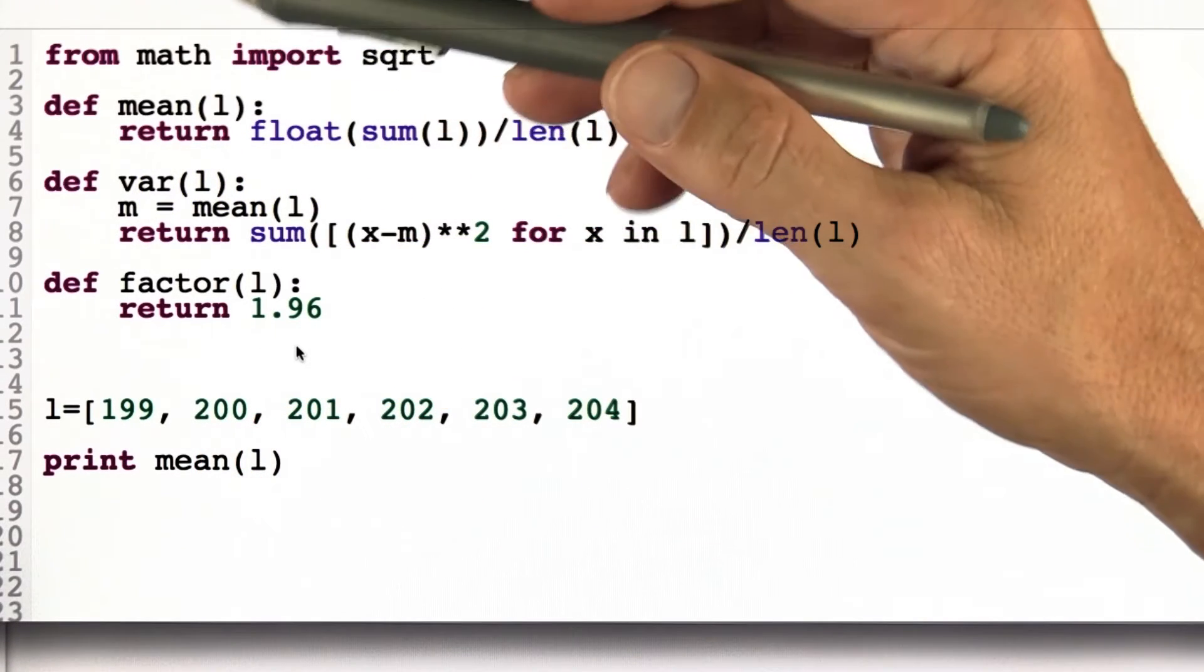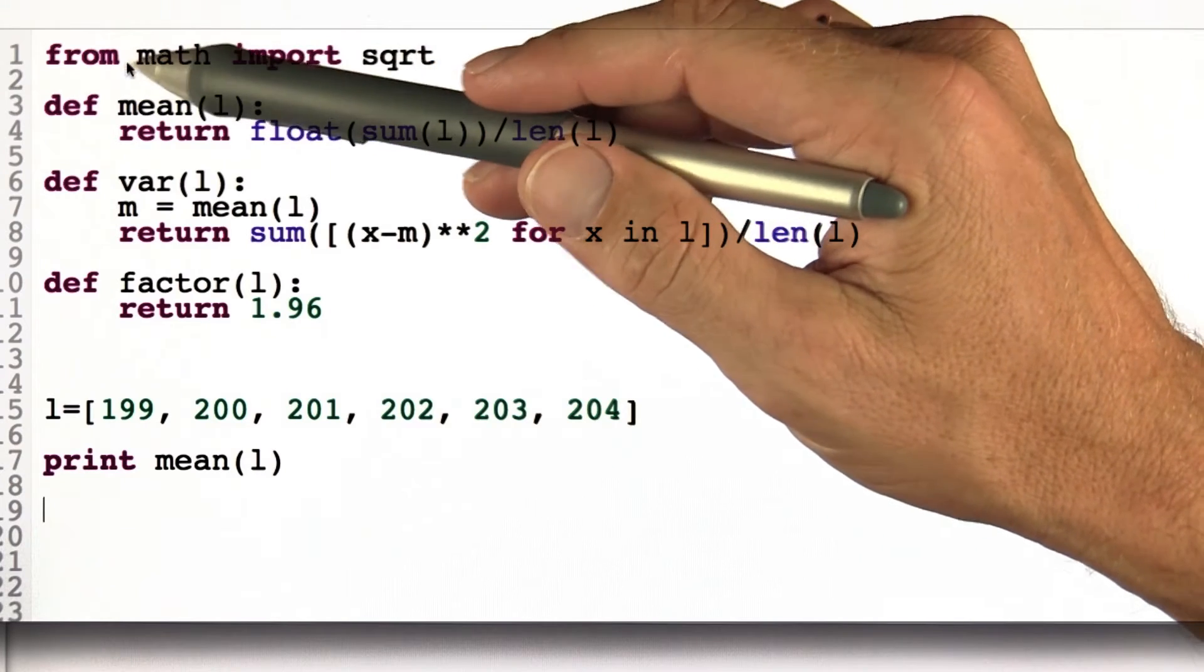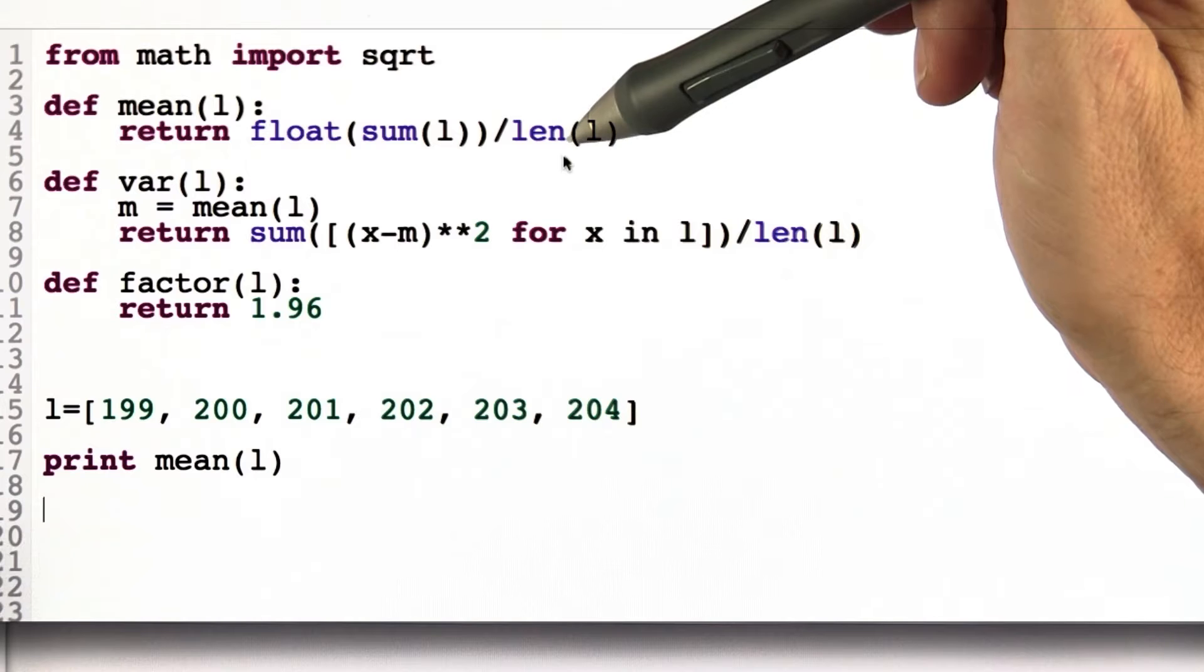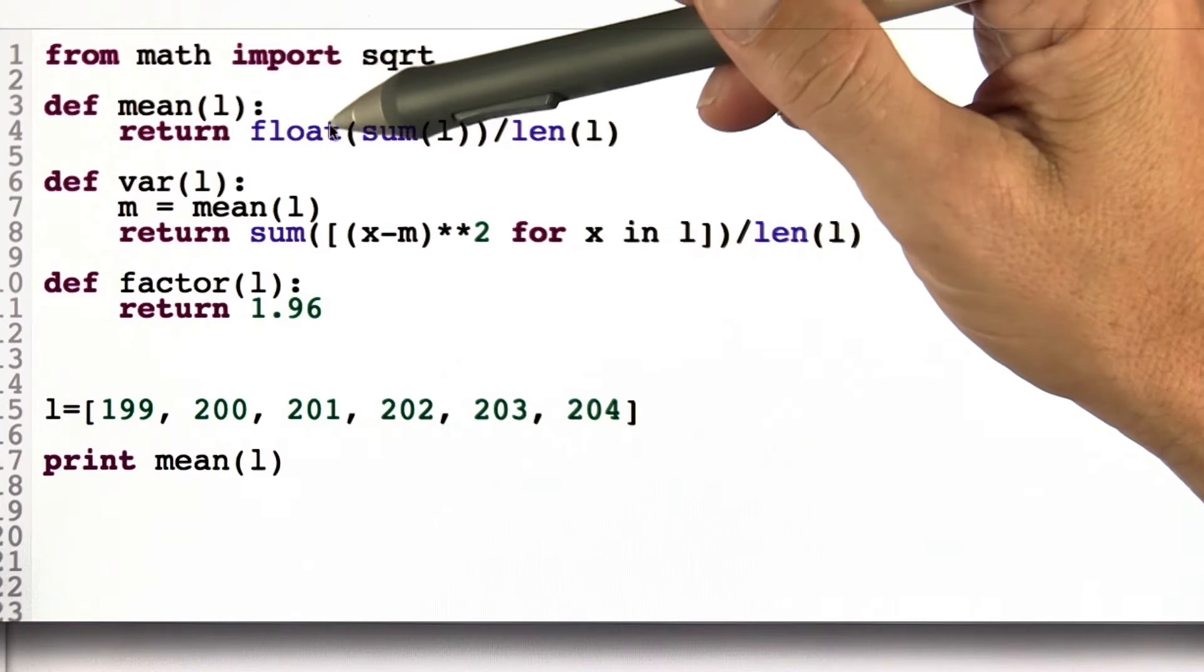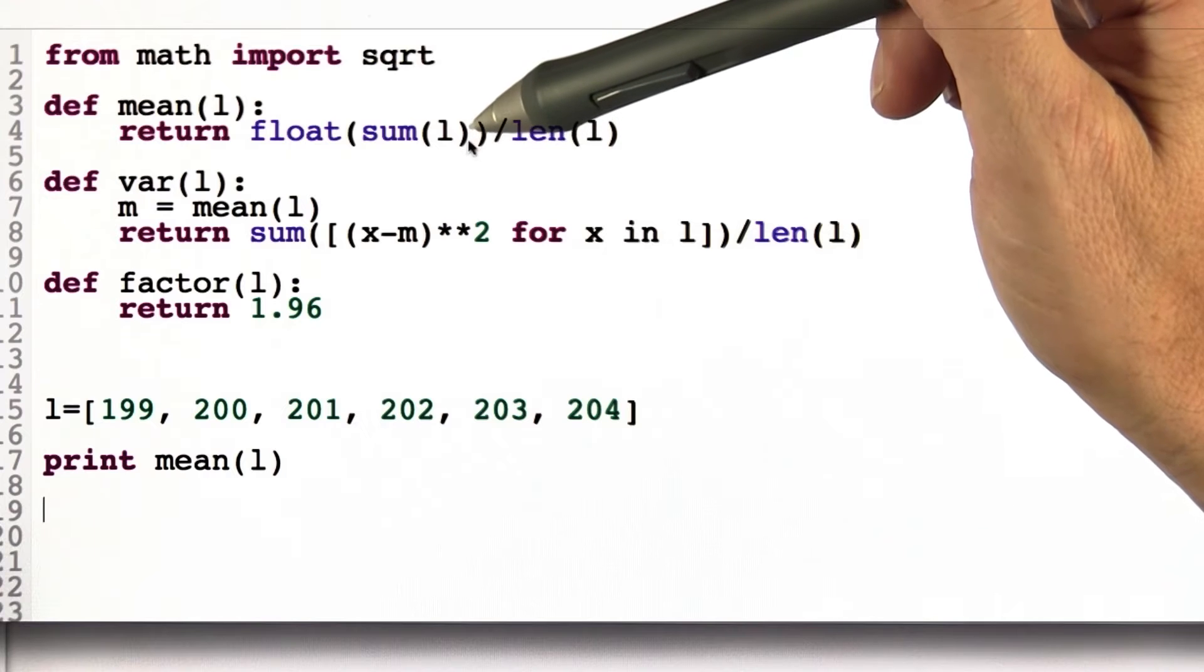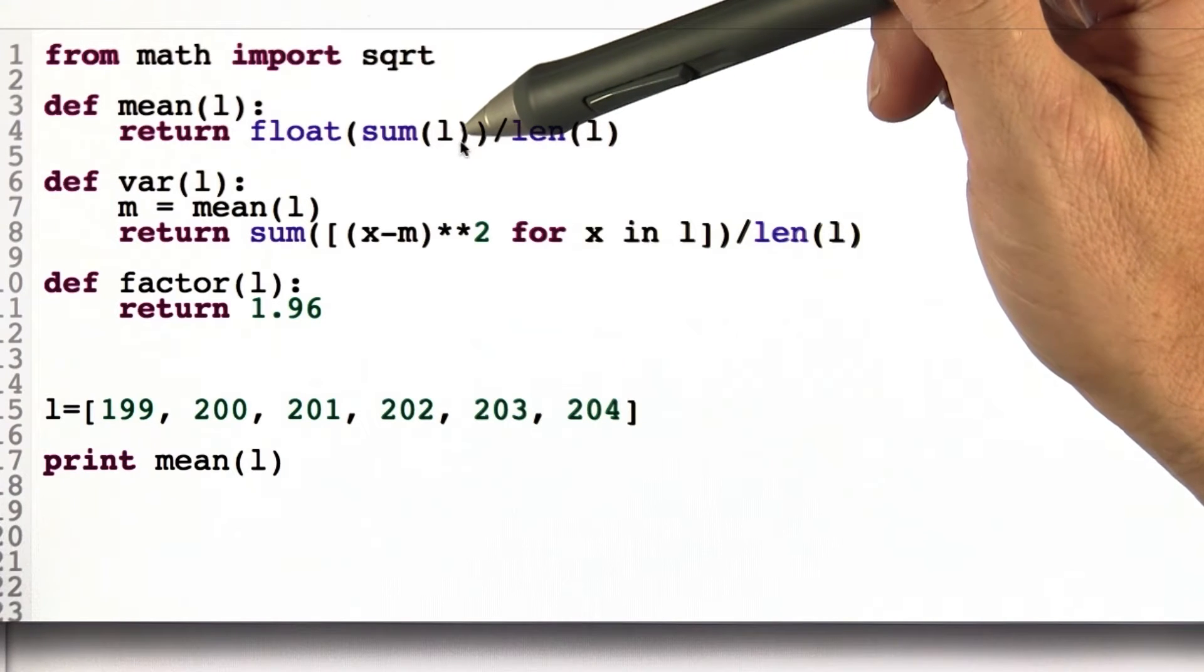So here's what I do. I'm going to give you functions you already know. We already programmed the mean function. Here it is again. Notice the use of the word float in case the list doesn't have a float. It happens to be one of these artifacts of type conversions in Python.